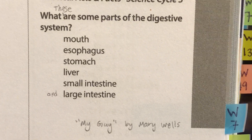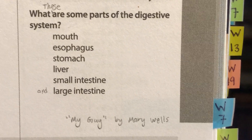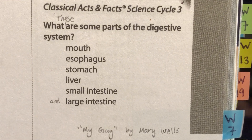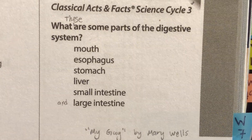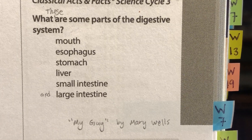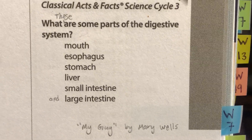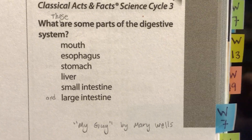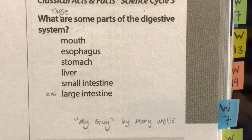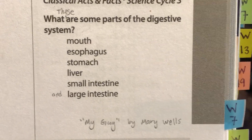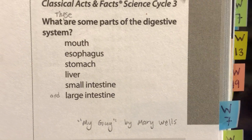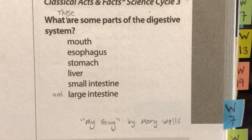What are some parts of the digestive system? These are some parts of the digestive system. Mouth, esophagus, stomach, liver, small intestine, and large intestine. These are some parts of the digestive system.